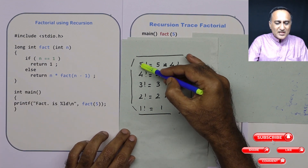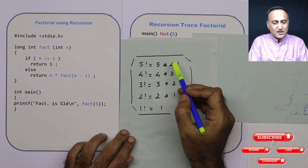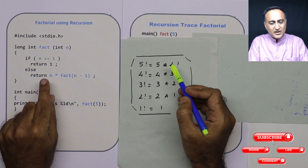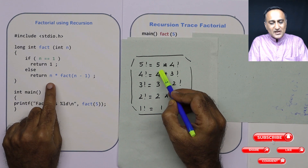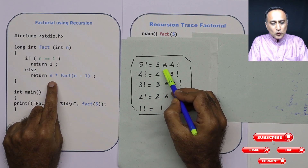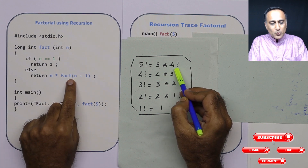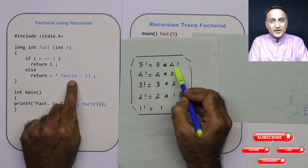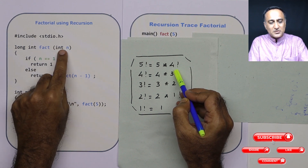But if you see any number other than 1, you just follow the recursive process. For example, if the number is 5, I am saying 5 factorial is 5 into 4 factorial. But at this point, I do not know what is 4 factorial. So the value of n now becomes 4 and we come back here.